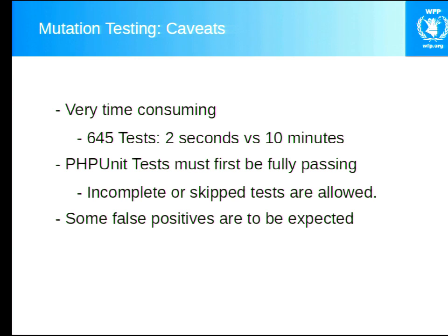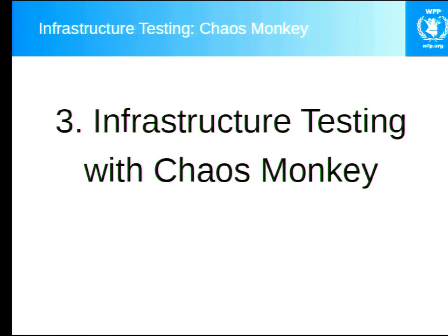A couple of caveats: it's very time consuming — 645 unit tests took two seconds, whereas mutation testing took about 10 minutes. Your unit tests must fully pass before even beginning, or else the mutation tests don't make sense. You can have incomplete or skipped tests — that's totally fine. And there are some false positives which do occur with mutation testing. We've now covered the interface with Gremlins.js and the logic layer with Humbug. Now we're down to the infrastructure level, where we'll use a tool called Chaos Monkey.